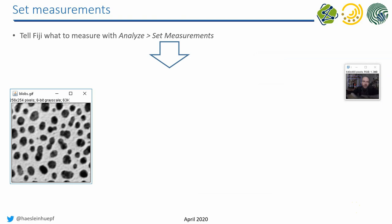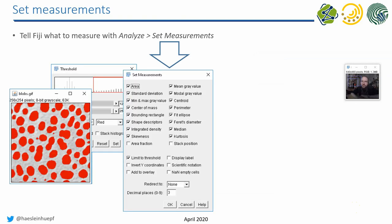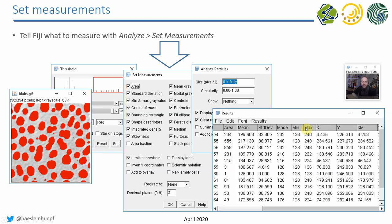If you want to derive measurements from your images, you should first set the measurements in the Set Measurements dialog after thresholding. Measurements in ImageJ are linked with the operation known as Connected Components Labeling. Both are combined in the Analyze Particles dialog — the Particle Analyzer — which takes a binary image or an image where the selection is drawn in red, and can generate measurements, a labeled image (a label map), or both.